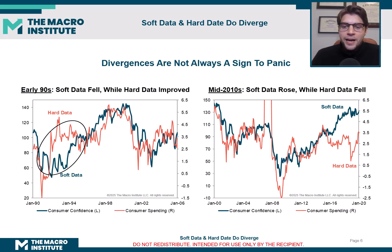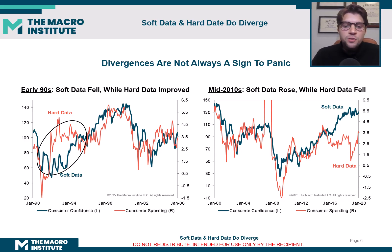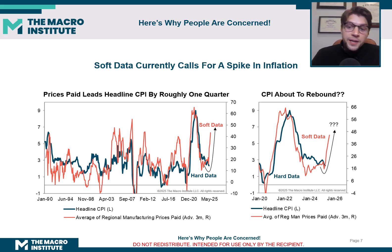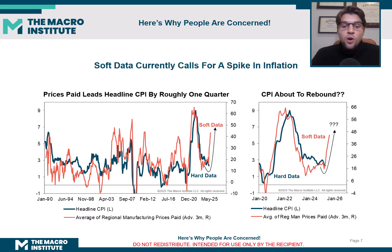Unfortunately I had to cut the slide there because COVID really messed with the data, but it just goes to show that this data can diverge from time to time. So that brings us to today — here's why people are concerned — we have seen a big move in the soft data, and the soft data currently calls for a big spike in inflation.